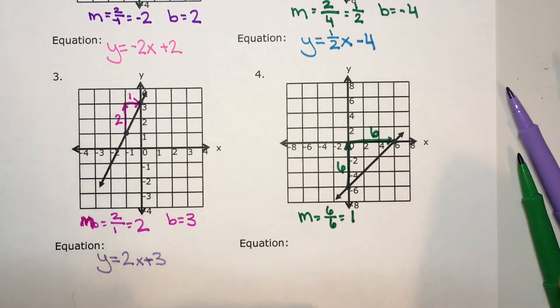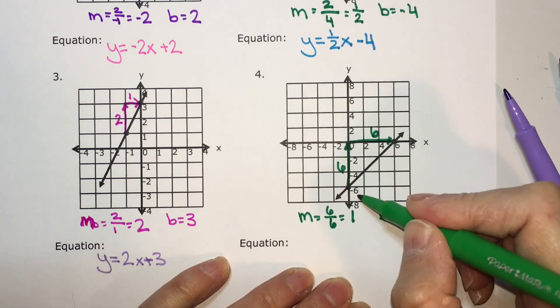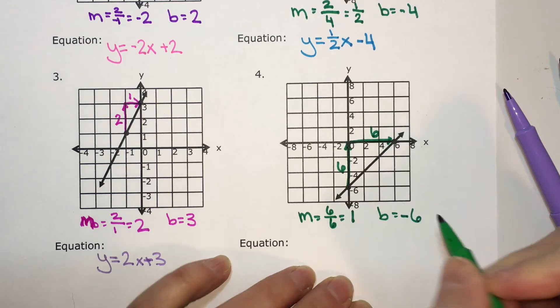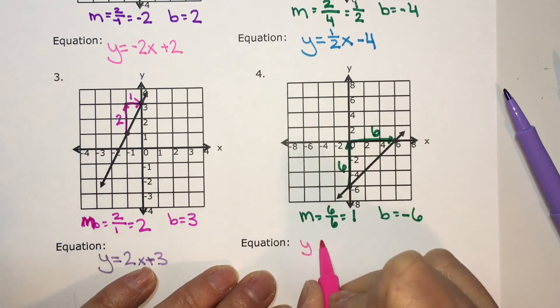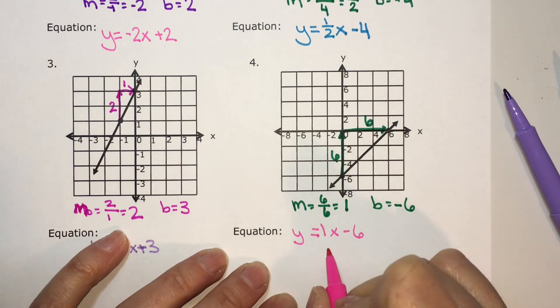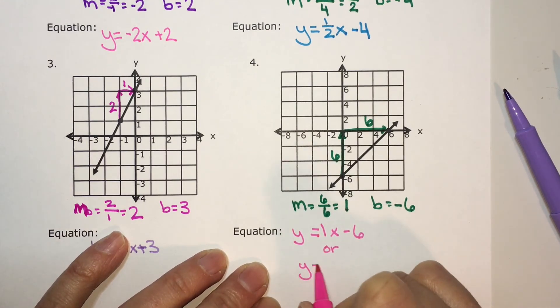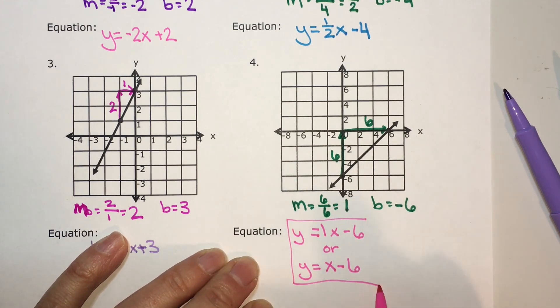Then, for my y-intercept, which is b, it goes to the y-axis at negative six. So when I write this equation, it's y equals 1x minus six, but 1x is the same thing as x, so this is the same thing as x minus six. So either answer is correct. This one's just more simplified.